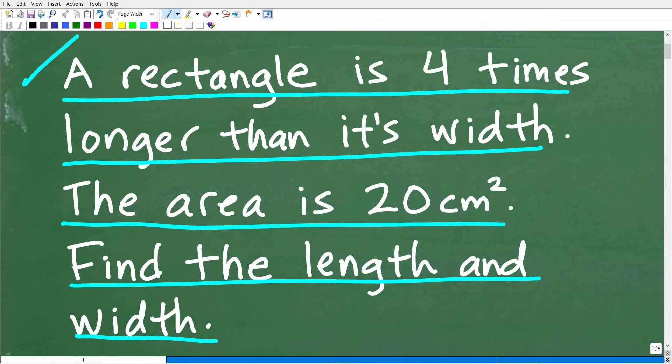All right, so one more time, let's take a look at this question. So a rectangle is four times longer than its width. The area of this rectangle is 20 centimeters squared. We want to find the length and the width of the rectangle. Let's go to take a look at the answer.